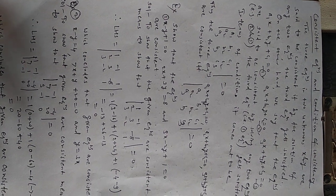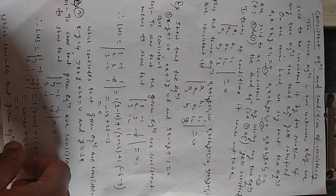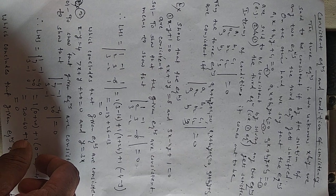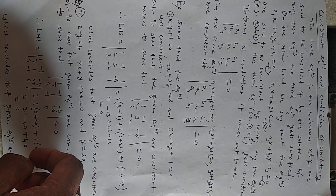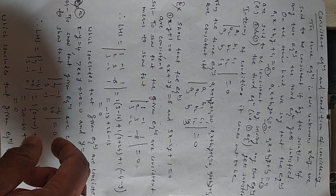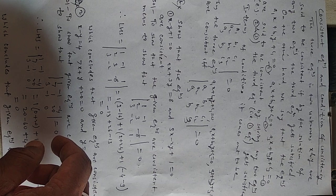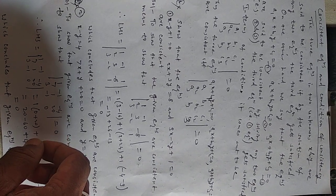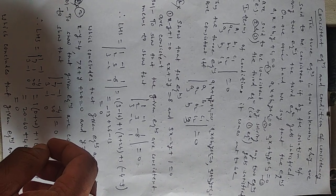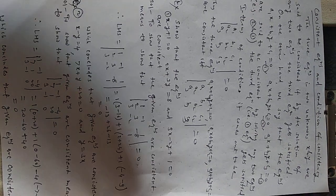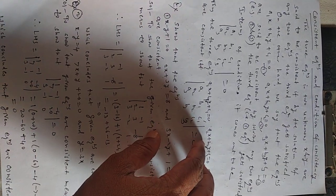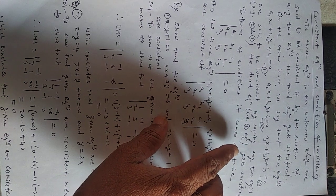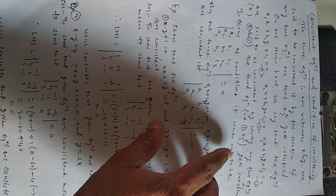In the last lecture, we have seen some examples on Cramer's rule. Now we will see the last part of the topic, that is consistent equations and condition of consistency, also to find the area by determinant method. Here in this lecture, we see consistent equations and condition of consistency.